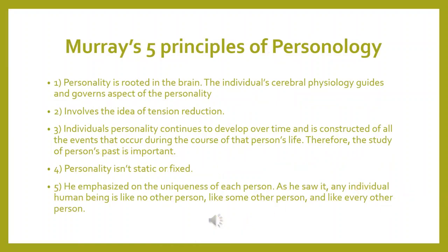There are five principles given by Murray. The first principle is that personality is rooted in the brain — the individual's cerebral physiology guides and governs aspects of personality. According to him, it is physiology, especially of the cerebral part, that determines how we behave. In the comment box, I'd like you to comment on what the function of the cerebrum is.